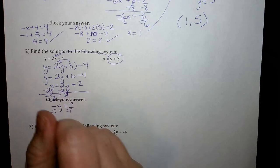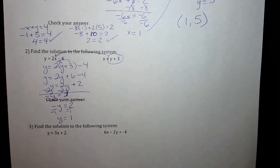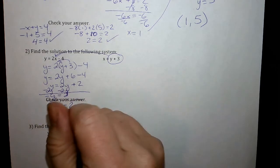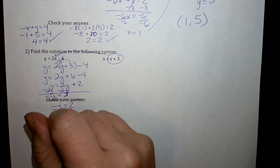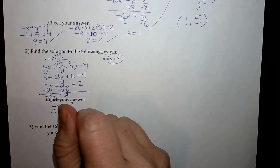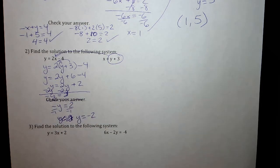I'm going to go kind of below this so you can see it better. Negative y equals 2. And then I'm dividing by negative 1 because we don't want negative y, we need positive y. Y equals negative 2.